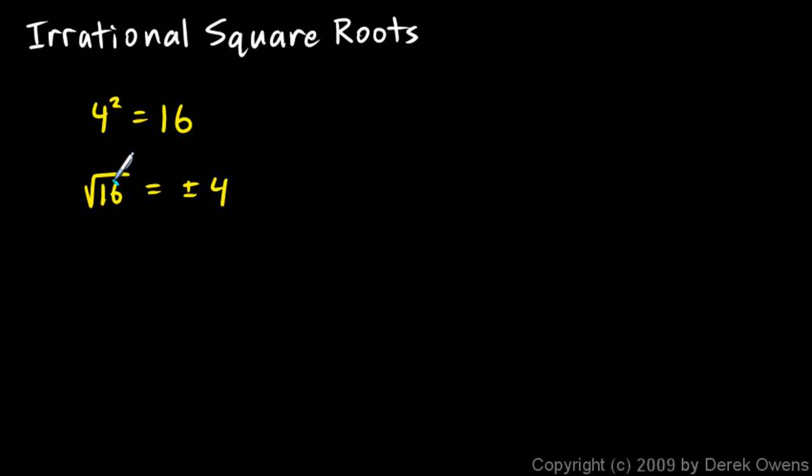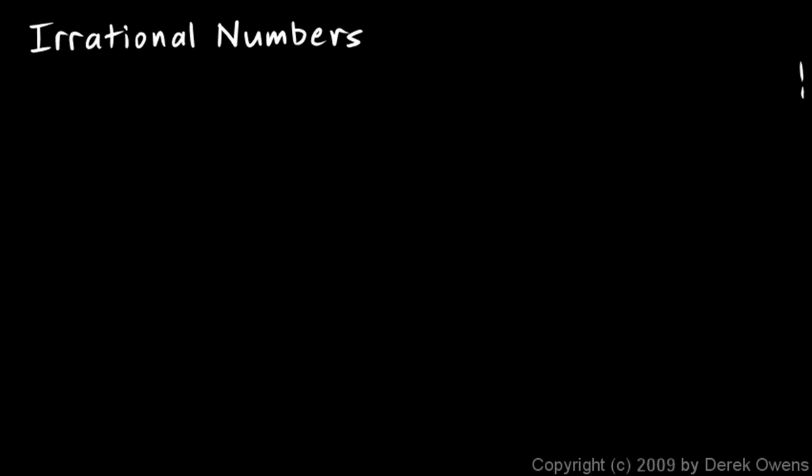But if you're square rooting something that's not a perfect square, for example if you try to do the square root of 17, you wouldn't get this nice round number like this. It's going to be 4 point something, but it's going to be an irrational number. So let's take a second and talk about what an irrational number is.